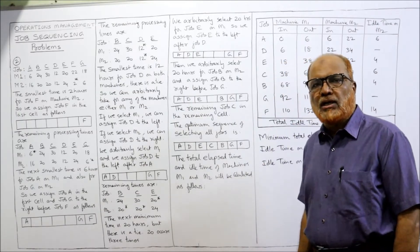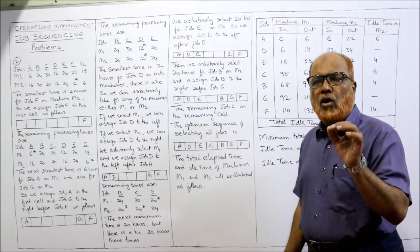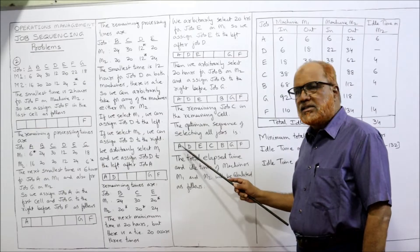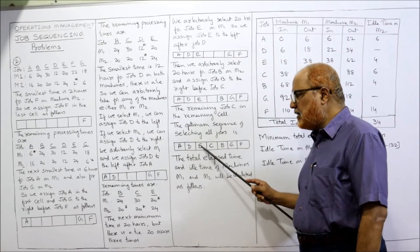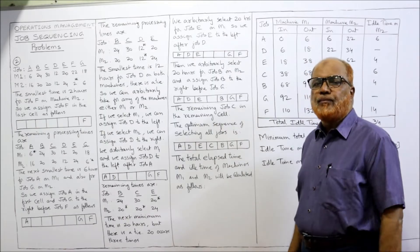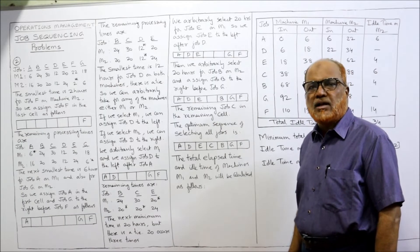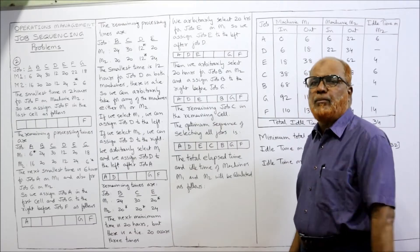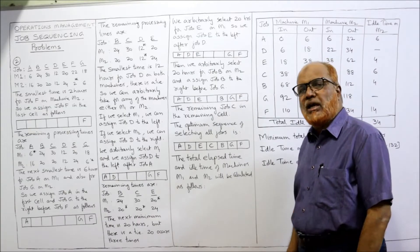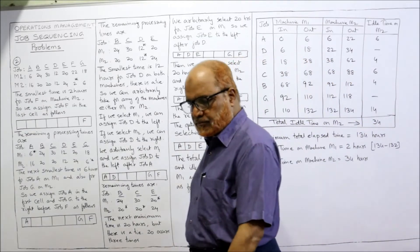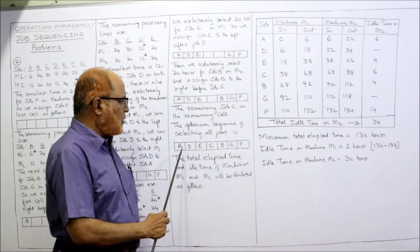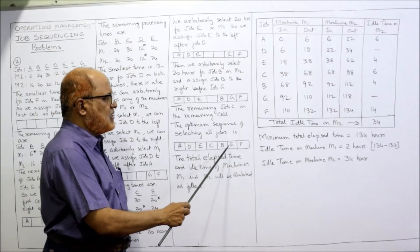The optimum sequence to minimize total elapsed time is: A → D → E → C → B → G → F. Following this sequence will ensure the minimum total elapsed time. Now we need to find the total elapsed time and idle time for machines M1 and M2 by constructing a table.